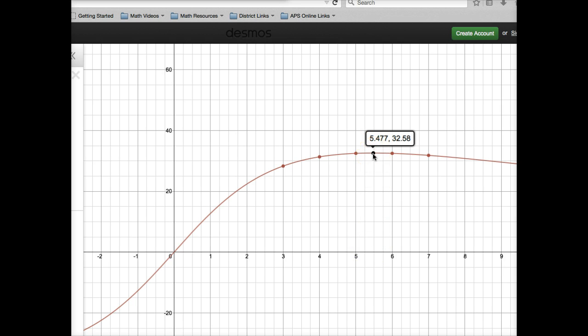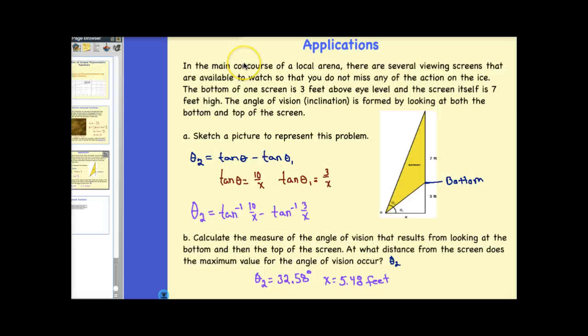In your calculator, you can use your max function, which is near the top. If you have a TI-84, it's under calc. So if you hit second calc, you'll see that you have a max function. So from my calculator, I know that in order to maximize, I would need to have a distance here of 5.48 feet and I would get an angle here of theta sub 2 of 32.58.